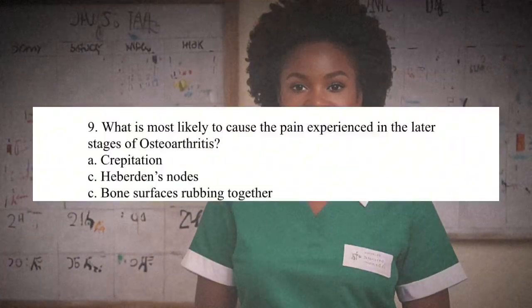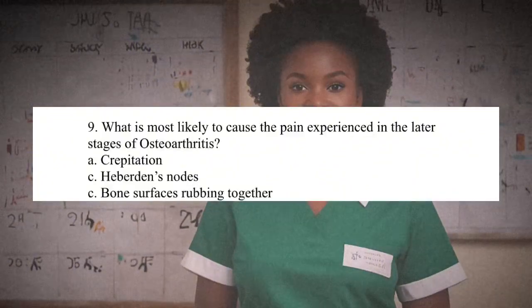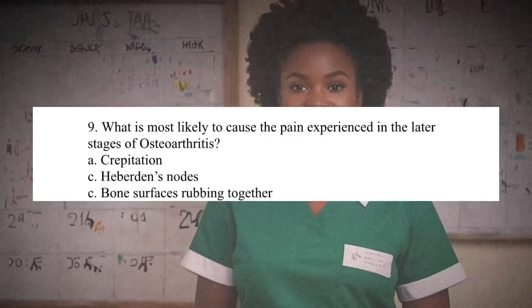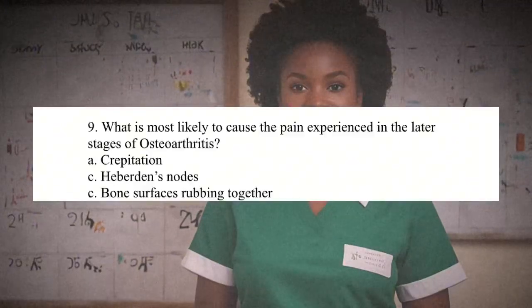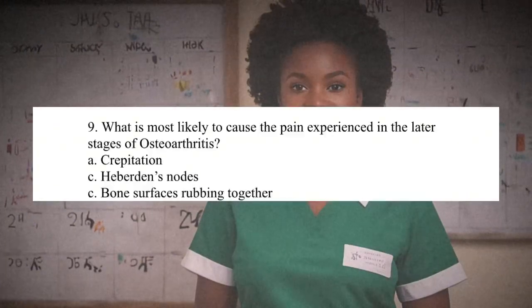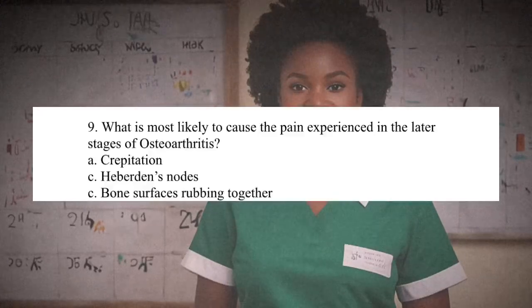Question 9: What is most likely to cause the pain experienced in the later stages of osteoarthritis? A. Crepitation. B. Heberden's nodes. C. Bone surfaces rubbing together. The correct answer is C. The pain in later osteoarthritis is caused by bone surfaces rubbing together after the articular cartilage has deteriorated. Crepitation occurs earlier in the disease with loose particles of cartilage in the joint cavity. Bouchard's nodes and Heberden's nodes are tender but occur as joint space decreases and as early as 40 years of age.